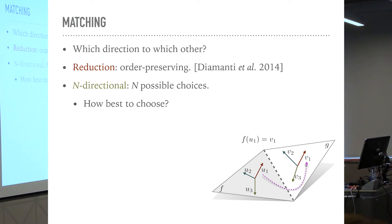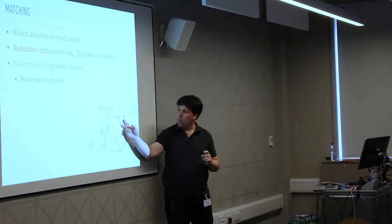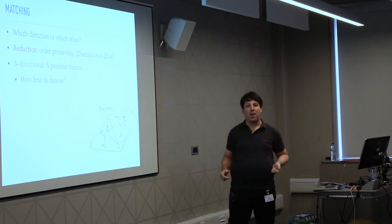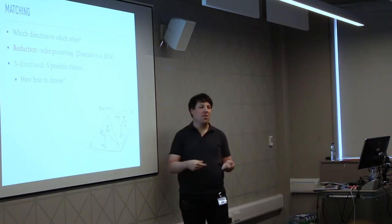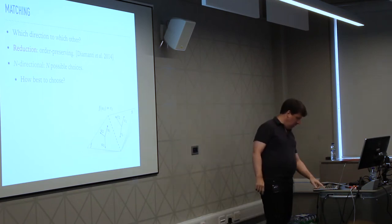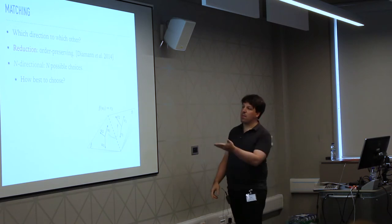Moreover, this one rotated a bit to the left and this one rotated a bit to the right — what am I comparing exactly? First reduction: we do the matching in an order-preserving way. That means I only have a single choice — if I put red to red, then blue goes to blue and green goes to green. That reduces the set of choices considerably.